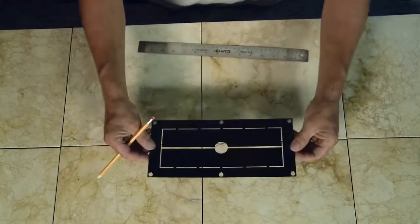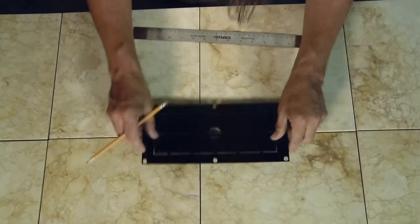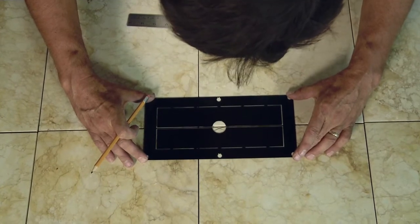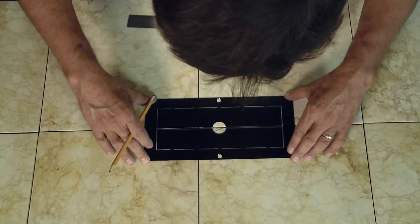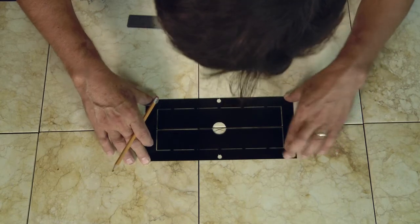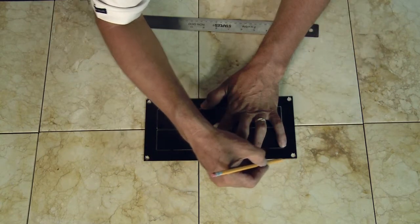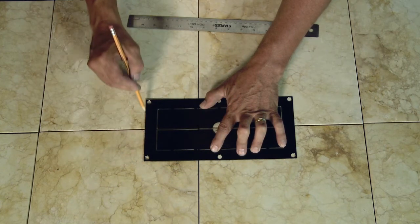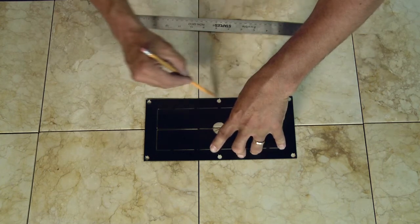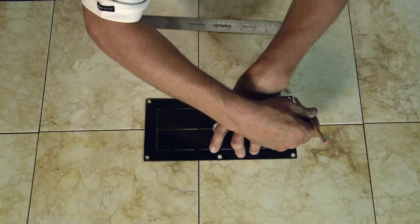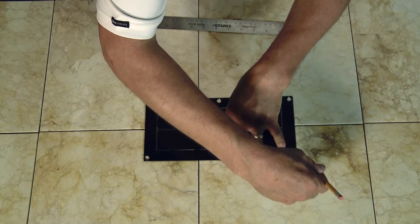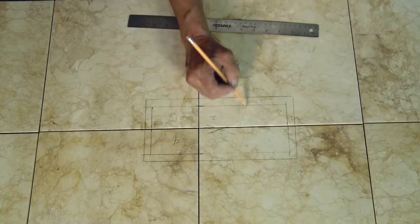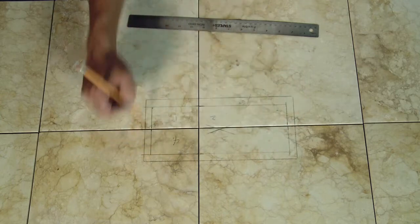Then you take our diffuser plate and you lay it over top of the opening. Make sure you're square and centered. Then you can mark your tile all the way around. That will be where we cut the tiles. Everything should be approximately a half an inch larger all the way around.